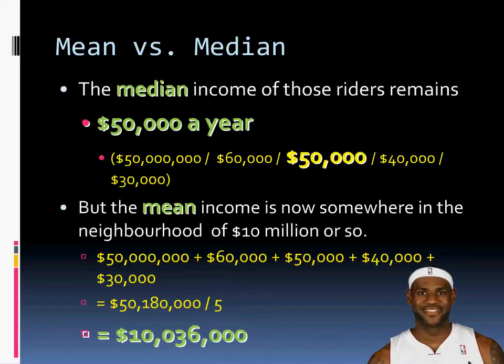If I were to make recommendations based on the mean, I would say we need to make our buses cater to millionaires — not very smart for public transit. That skew happened only because one person got on the bus. Whereas if I stick to the median, I realize that the $50,000 yearly income is much more accurate of the riders who take public transit, and my recommendations and service would cater more towards those people. A lot more accurate.